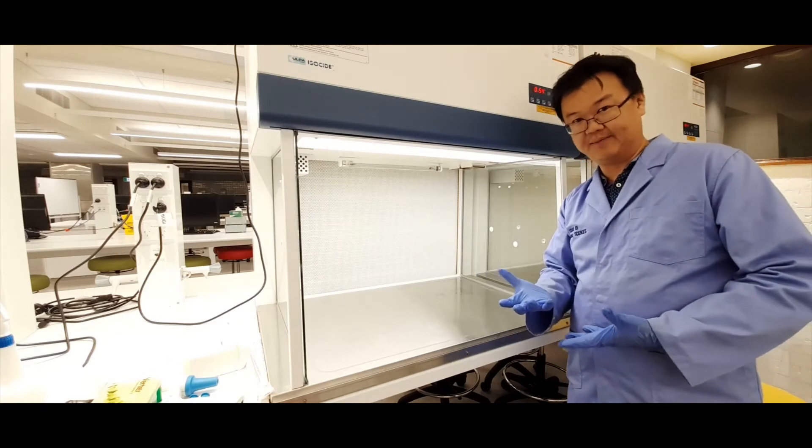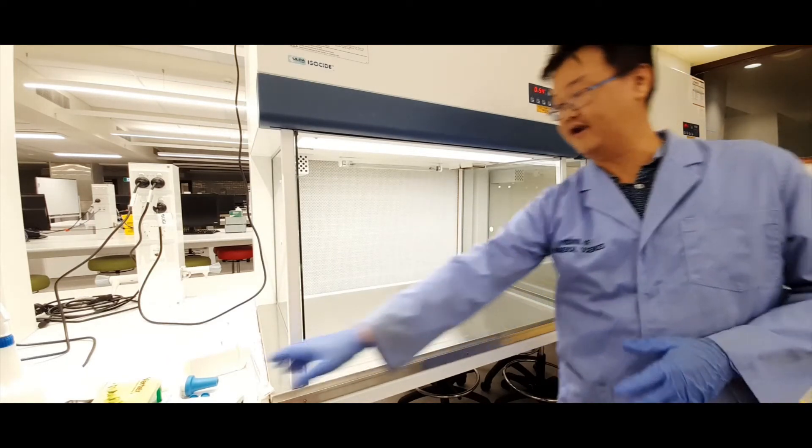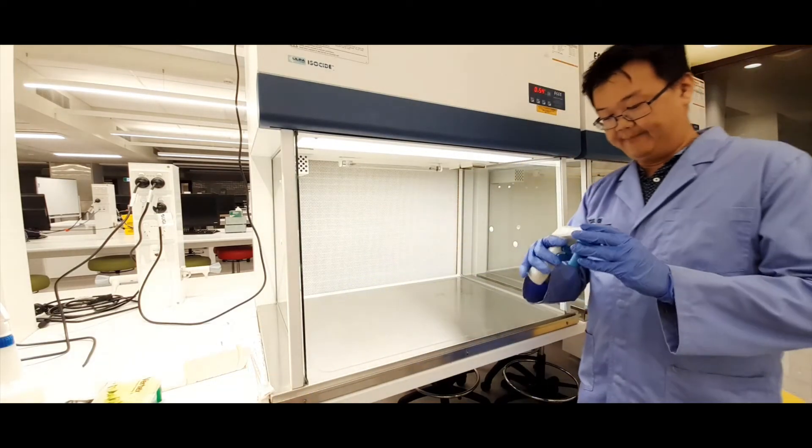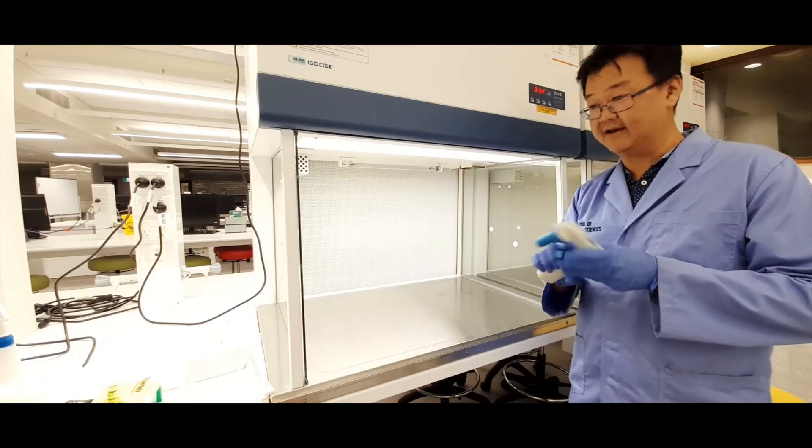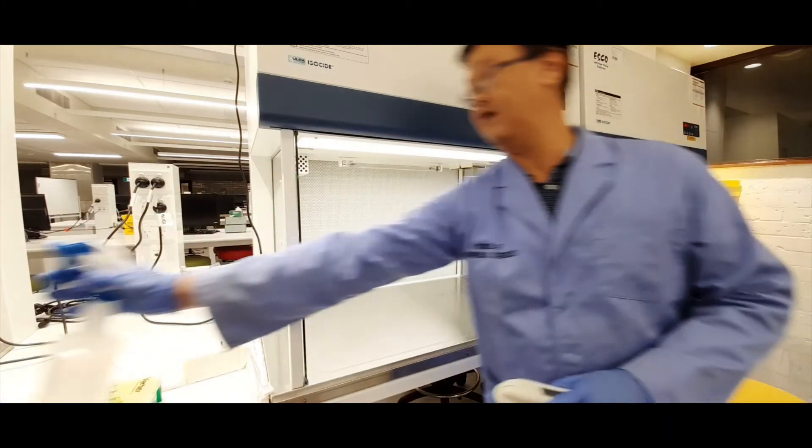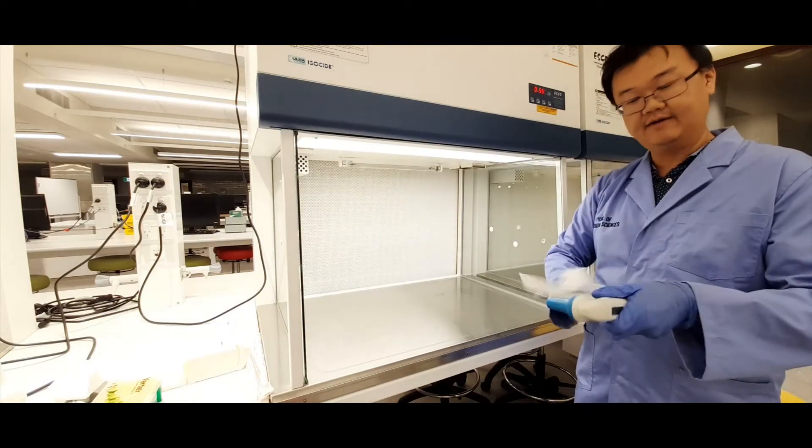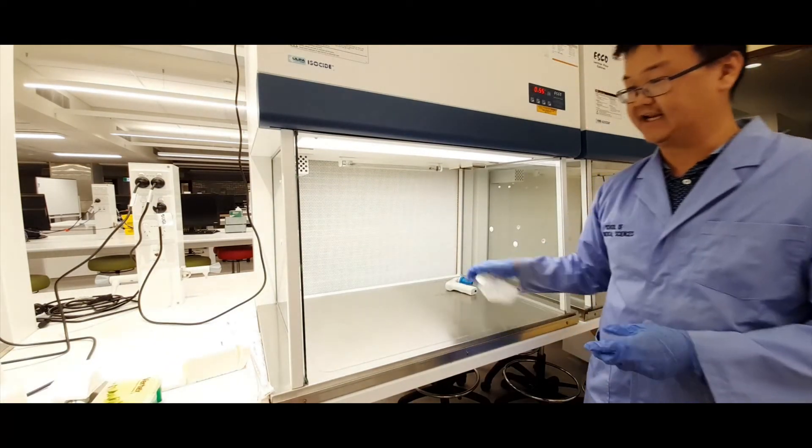So, for example, if I take this electronic pipette aid, or it's also called a pipette gun, just give that a quick spray with 70% ethanol and wipe that down with paper towels before placing that in the hood.